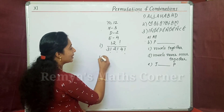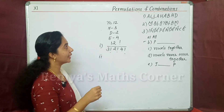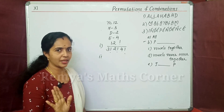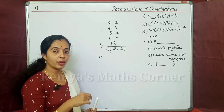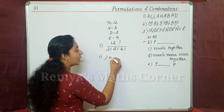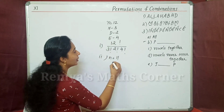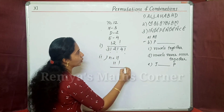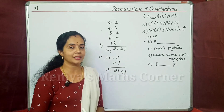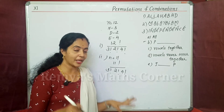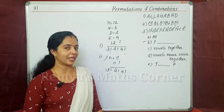This is the question. The question is, how can P start with the words? If we start with P, we fix P. In total 12 letters, if we fix P, the total number of arrangements is 11 factorial divided by 3 factorial into 2 factorial into 4 factorial.